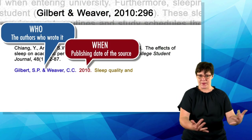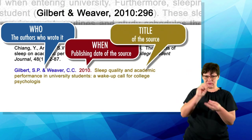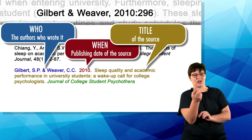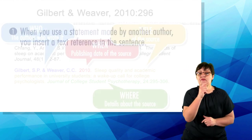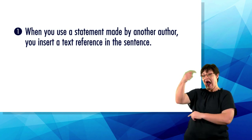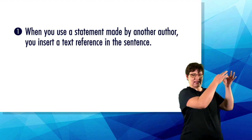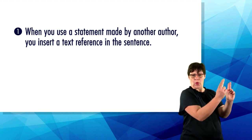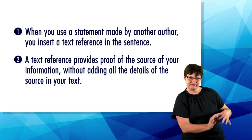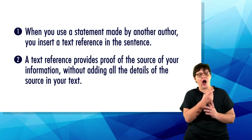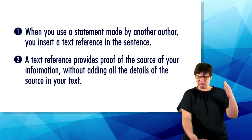Before we focus on how some of these styles differ, let's recap on text references, also known as citations. When you use a statement made by another author, you insert a text reference in the sentence. This is a shortened version of the entry in the reference list. The purpose of a text reference is to provide the reader with proof of the source of your information, without adding all the details of the source in your text.